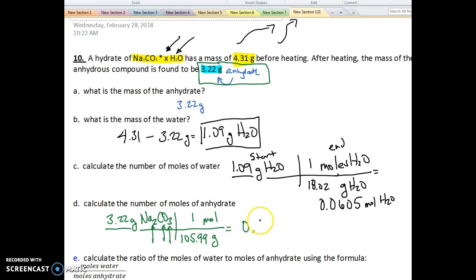0.0304 moles of anhydrate, which is, again, Na2CO3. So both of these I want to convert to moles. I want water in moles, and I want my anhydrate in moles. What I do not want to convert is my 4.31 grams at the top of my hydrate. I'm not worried about that.